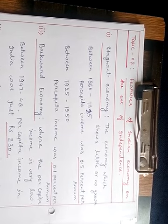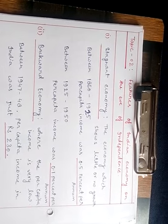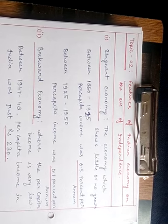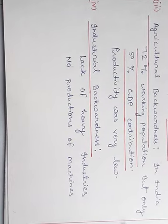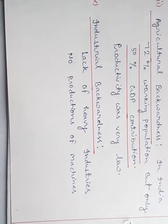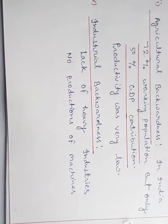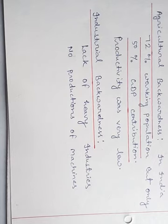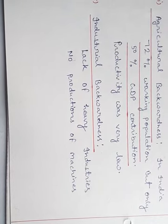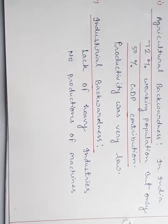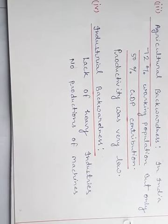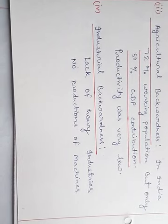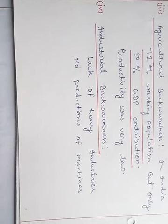Our next feature was agricultural backwardness. In India, approximately 72% of the total population was engaged in agriculture, but their contribution to GDP was only 50%. This means 22% of the population, despite working, fell into the category of unemployed. This was because where only two people were needed to work, entire families would work together, and productivity was very low.